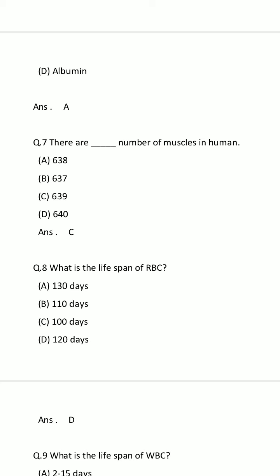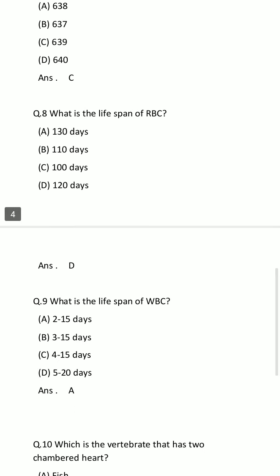Question number 7: There are dash number of muscles in the human body. Option A: 638. Option B: 637. Option C: 639. Option D: 640. Your time is 10 seconds, starting now. The time is finished. The answer is Option C: 639.